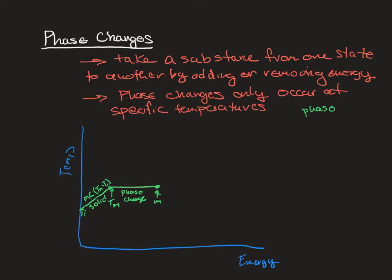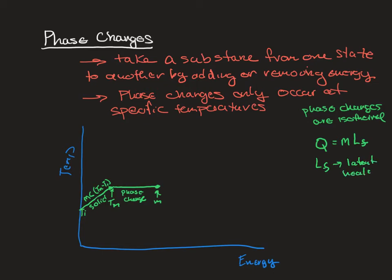So how exactly do we calculate the energy needed for the phase change? We can't use the same formula anymore because the change in temperature is zero. The formula we use is Q = m × LF, where LF is the latent heat of fusion. These values are found in the table in your textbook. The units need to be in joules per kilogram, because the latent heat is the energy needed to take one kilogram of the substance through its phase change.